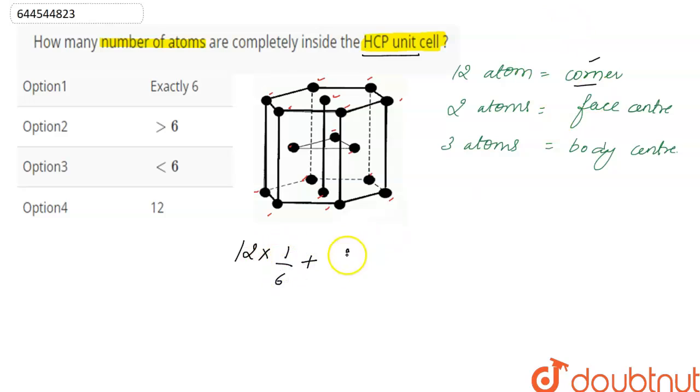Plus two atoms at face center and their contribution of atoms at face center is one by two, and we have total three atoms at body center and the contribution of every atom at body center is one.